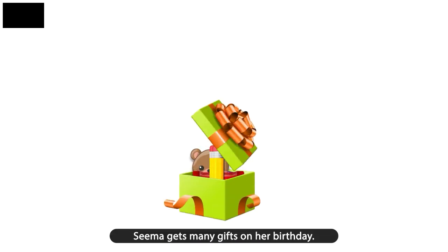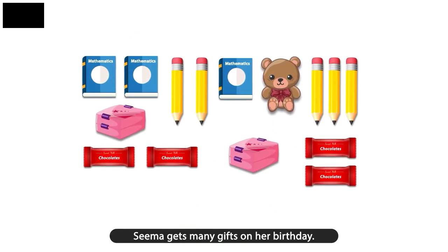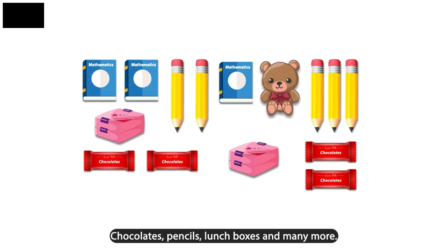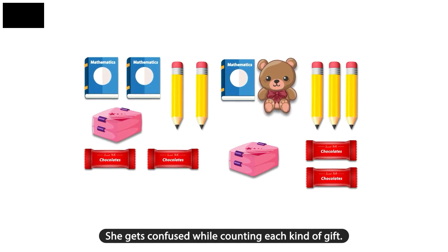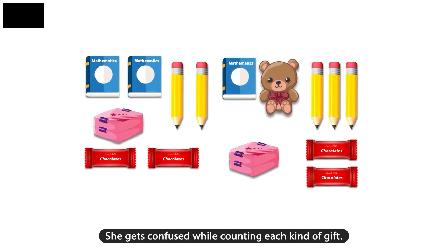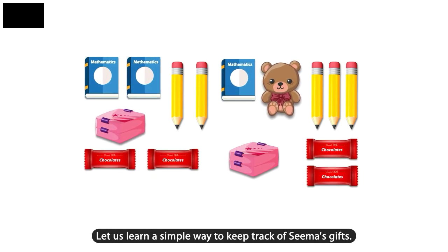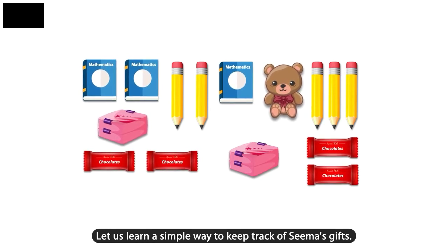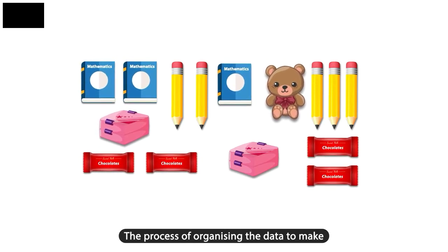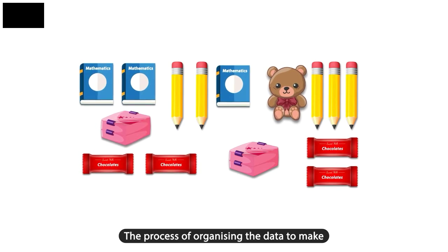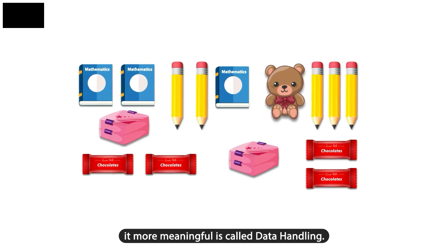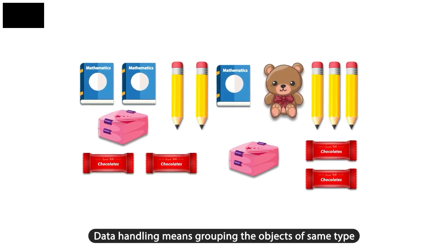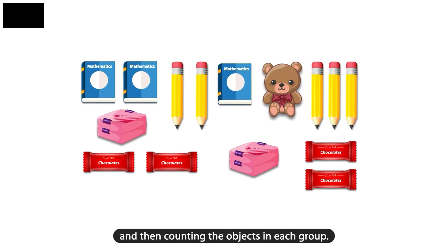Data handling. Seema gets many gifts on her birthday — chocolates, pencils, lunch boxes, and many more. She gets confused while counting each kind of gift. Let us learn a simple way to keep track of Seema's gifts. The process of organizing the data to make it more meaningful is called data handling. Data handling means grouping the objects of the same type and then counting the objects in each group.